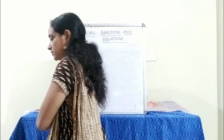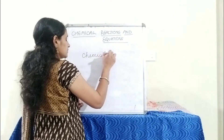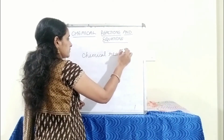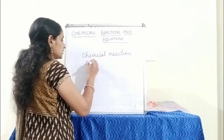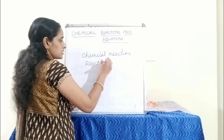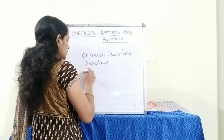Welcome back to my channel. We are going to discuss chemical reactions and equations from Class 10 chemistry. A chemical reaction is a process in which the original substances lose their nature and identity and form new substances with different properties. The substances which take part in a chemical reaction are called reactants, and the substances which are formed are called products.